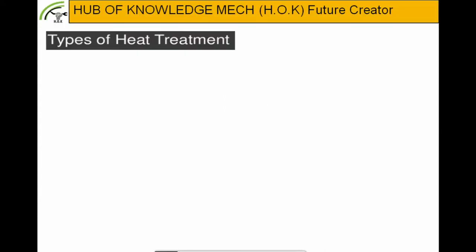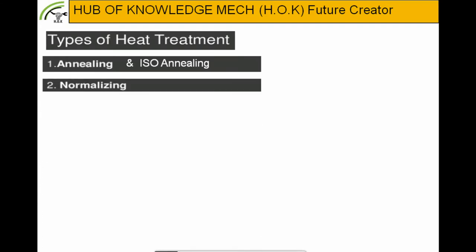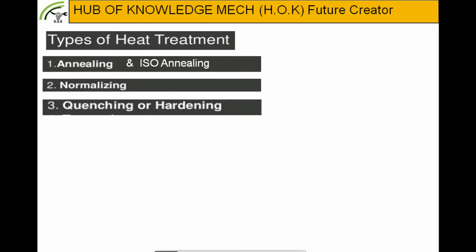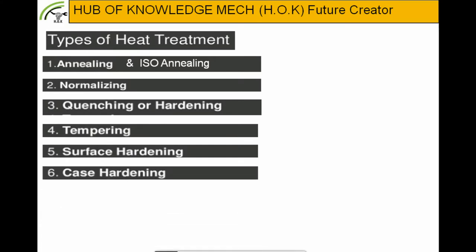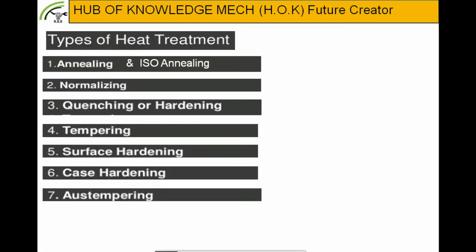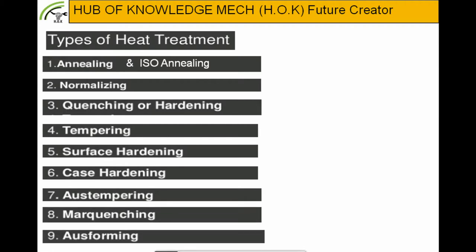Now let's discuss types of heat treatment. First, annealing and iso-annealing. Second, normalizing. Third, quenching or hardening. Fourth, tempering. Fifth, surface hardening. Sixth, case hardening. Seventh, aus-tempering. Eighth, mar-quenching. Ninth, aus-forming. In this session, I will explain four types of heat treatment: annealing and iso-annealing, normalizing, quenching or hardening, and tempering.